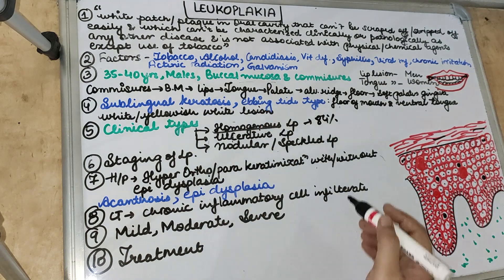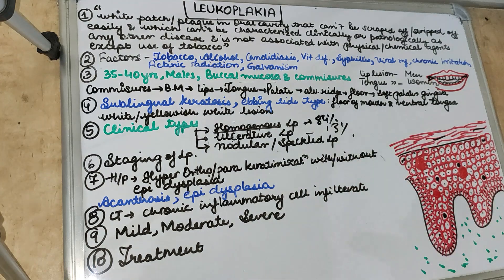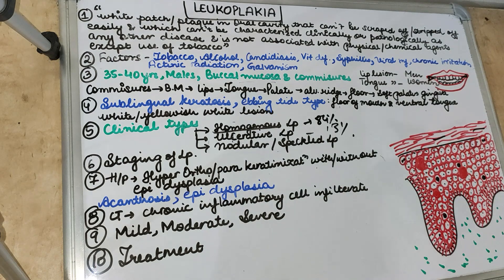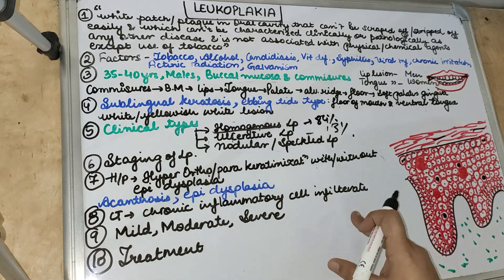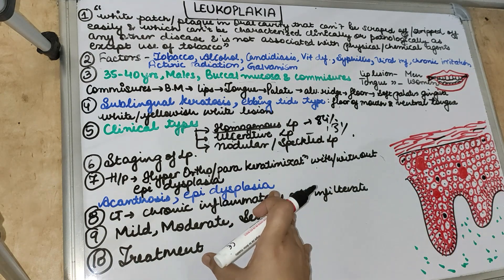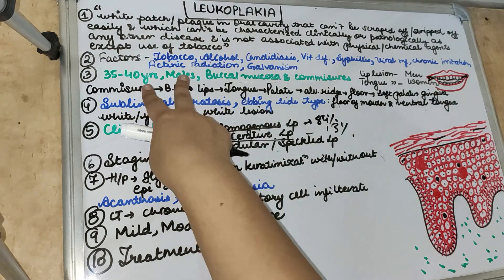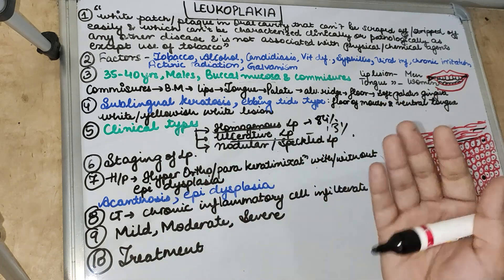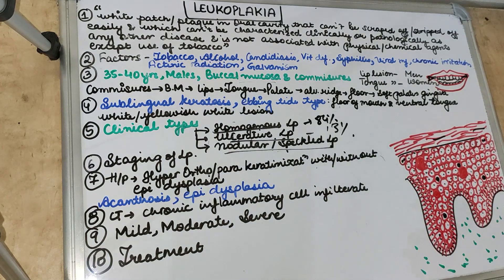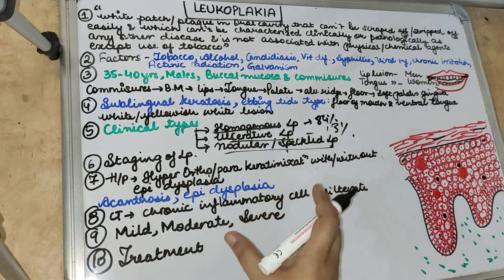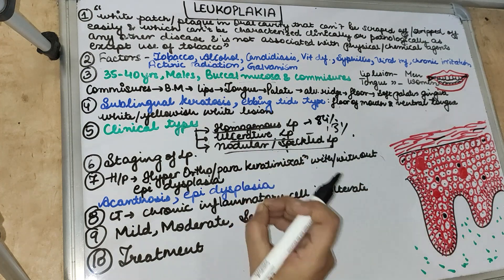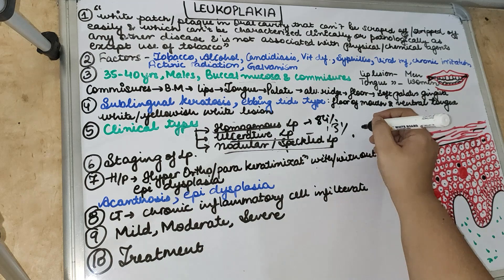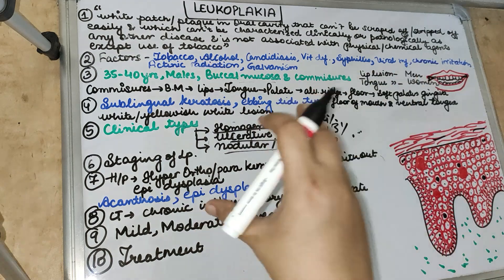Ulcerative leukoplakia is seen in about 13% of cases. It exhibits a yellowish area of fibrin giving the appearance of an ulcer, with a white patch at the periphery of the lesion. There can also be pigmentation associated when the patient is a tobacco chewer or smoker, due to heat causing pigmentation. The nodular or speckled type, also called leukoplakia erosiva, is a mixed red-white lesion with small keratotic nodules scattered over atrophic oral mucosa. These can be very small pinhead-size nodules with high malignant potential.